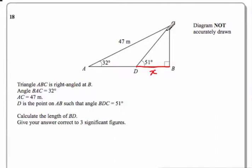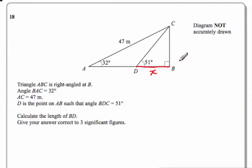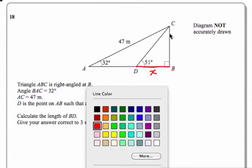We've got two right-angle triangles here — the small one and the big one. I'm going to look at the big one first, because they both share a common side. If I can find that shared side using the bigger triangle, then I can use trigonometry again on the small triangle to find BD. So I'm going to be using trigonometry twice for this one.